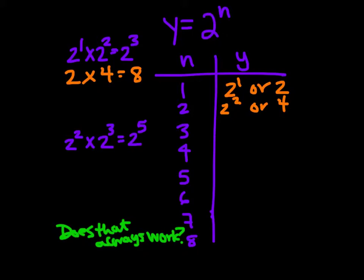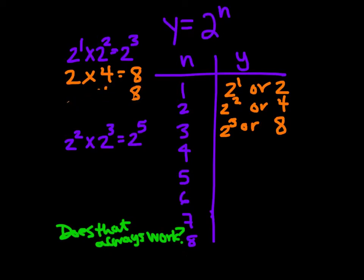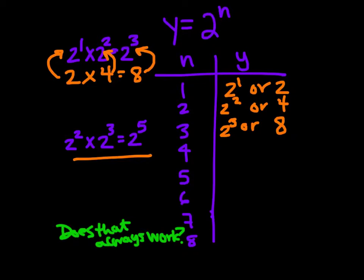Let's verify that 2 to the third power equals 8: 2 times 2 is 4, times 2 again gives us 8. So 2 to the first power times 2 to the second power equals 2 to the third power. Is this true? 2 to the second power times 2 to the third power will equal 2 to the fifth power. Essentially what I'm seeing is an addition of these exponents — 2 plus 3 is equal to 5.